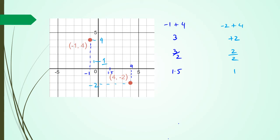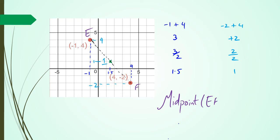So 1 is the y component, and the midpoint is at x equals 1.5 and y equals 1. You can see how that's the midpoint of the line. Let's call these two points E and F — the midpoint of EF equals (1.5, 1).